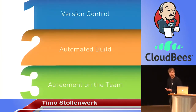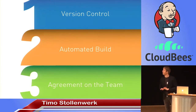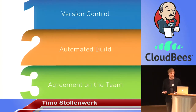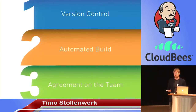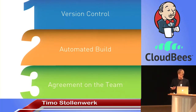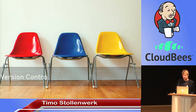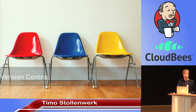In order to set up an effective continuous integration system, there are three things you need: version control, an automated build and testing process, and agreement on the team. Continuous integration is not really a tool — it's not Jenkins or BuildBot — it's a process that your team implements.